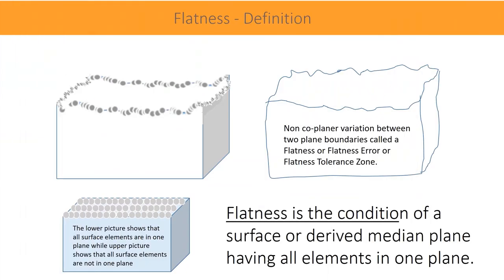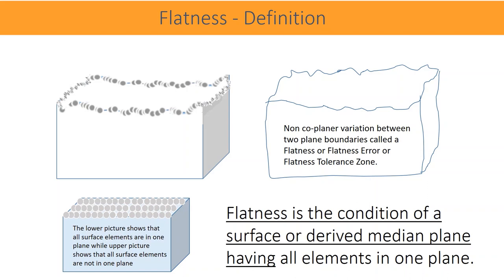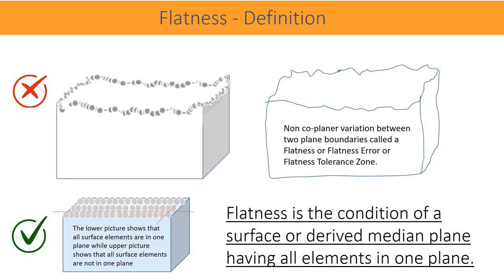Flatness is the condition of a surface or derived median plane having all elements in one plane. The lower picture shows that all surface elements are in one plane, while the upper picture shows that all surface elements are not in one plane. The non-coplanar variation between two plane boundaries is called flatness error or flatness tolerance zone.